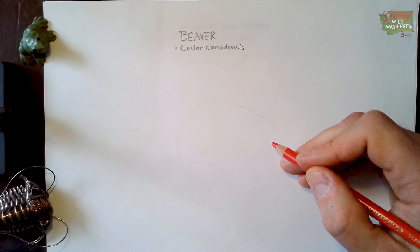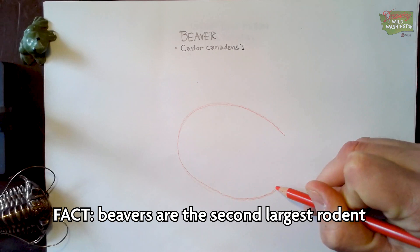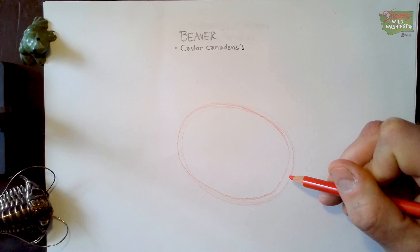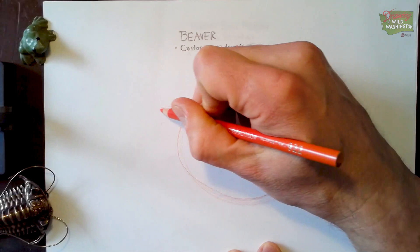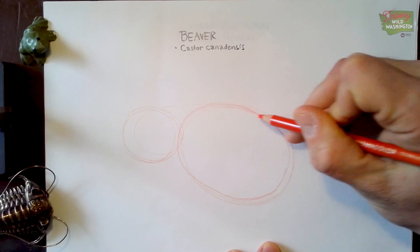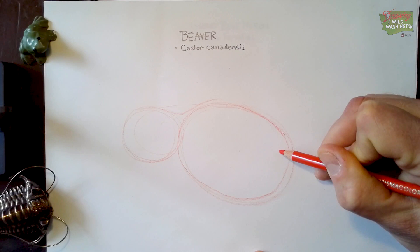Beavers are the second largest rodents in the world after the capybara, and they can weigh up to about 55 pounds. I'm going to get started right here in the body with a big oval, sort of squashed down like that. The next thing you want to draw is the head, which is a smaller oval about half the size of this big oval, right in line up here with the top of the big oval. It's going to have the head here and this sort of hunchy back coming down like that.